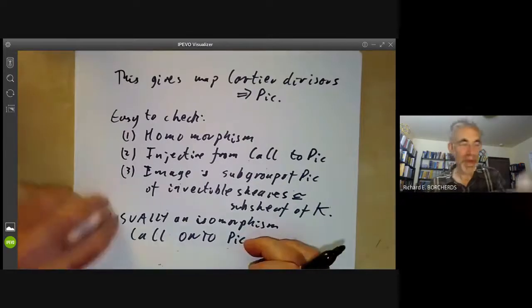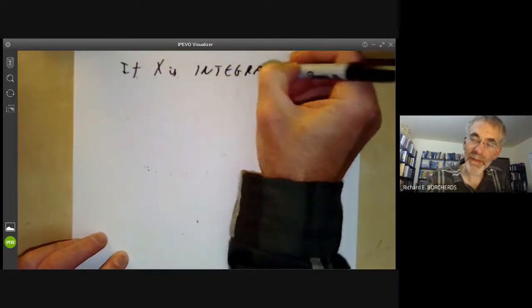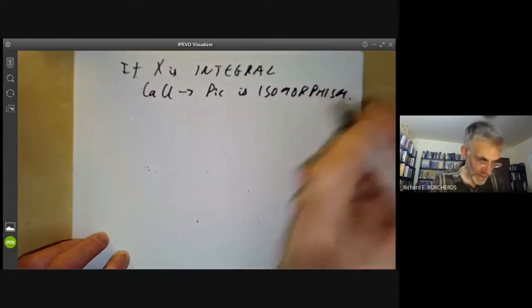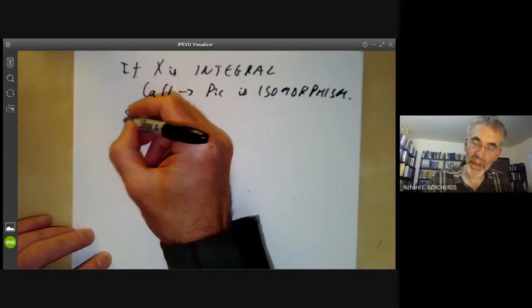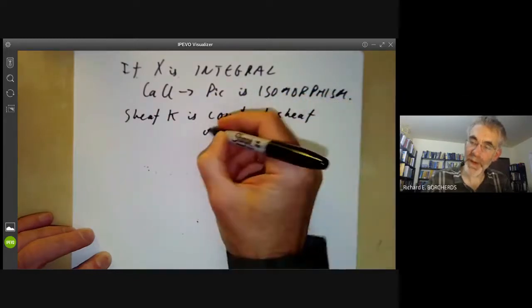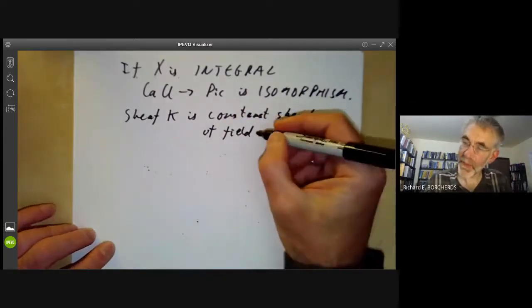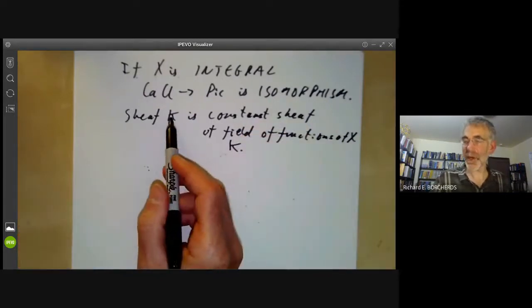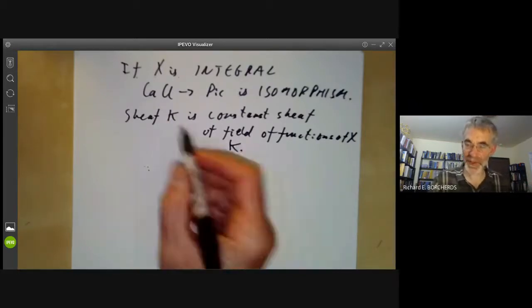In particular, if X is integral, then the map from CACL to the Picard group is an isomorphism. This isn't difficult to see. Since X is integral, the sheaf K is just the constant sheaf of the field of functions of X, which I'll also denote by K. Sometimes people denote the sheaf by a calligraphic K, but because I'm not very good at drawing calligraphic letters, I'll just use K for both.